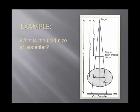Let's take the first example. We know our target-to-film distance is 130 and our target-to-axis distance is 100. What is our field size at isocenter, given that the field size on film is 17? The magnification is 130 over 100, so it's a mag of 1.3. But they're not asking for the magnified size — they're asking for the field size at isocenter. This is actually a minification problem, so the answer is going to be smaller. You divide 17 by 1.3 and get 13. Your field size at isocenter should be 13.